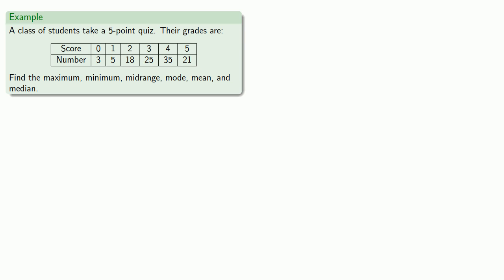So, for example, let's suppose that a large class of students takes a five-point quiz, and their tabulated scores look something like this. From this table, we want to find the maximum, minimum, midrange, mode, mean, and median. We can see from the table, the highest score represented is a five, while the lowest score is a zero, which gives us our maximum and minimum.